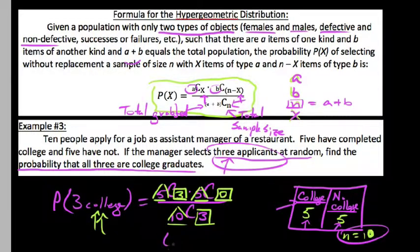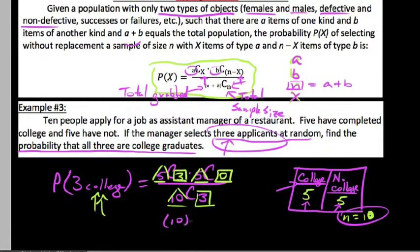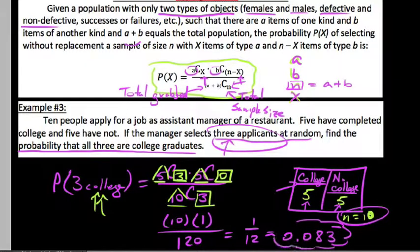So now we need to calculate these. So we say five choose three. Five choose three happens to be 10. Five choose zero is one. I'll leave that as an exercise for you guys to find. And we say 10 choose three comes out to be 120. So we get 10 out of 120, which is 1/12, which is approximately 0.0833. So we got 0.083 repeating. So this is just some examples of the hypergeometric distribution.